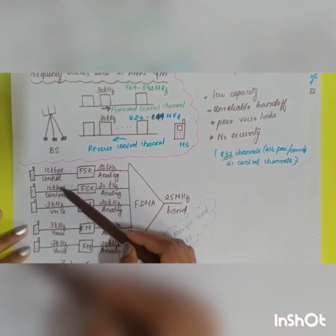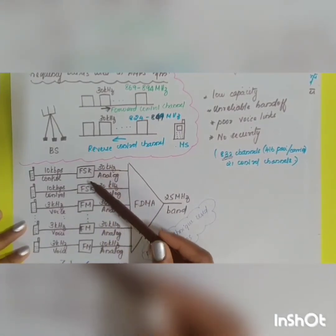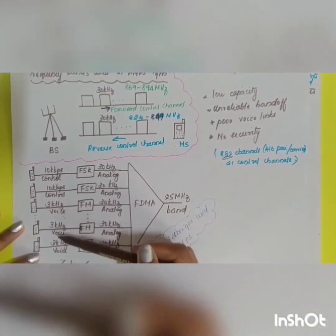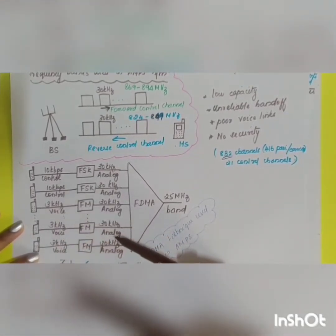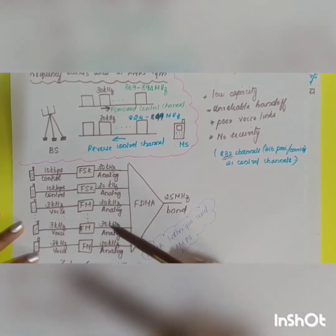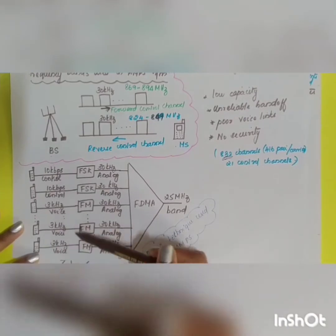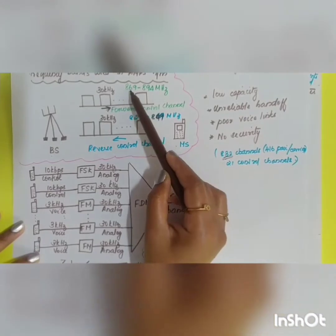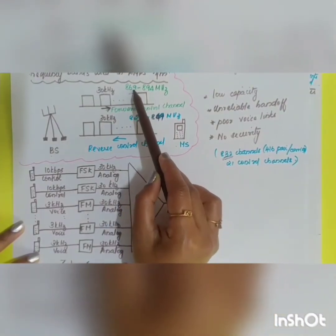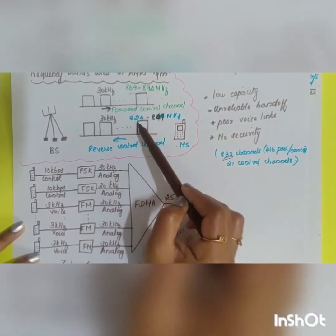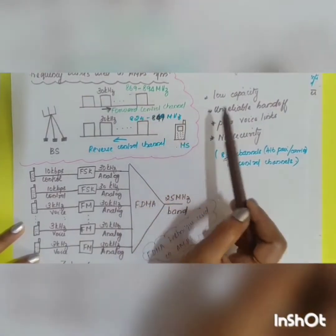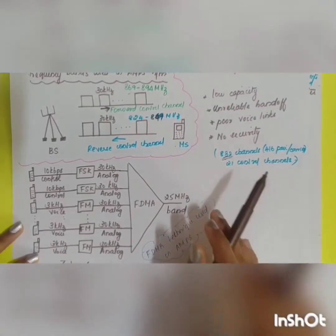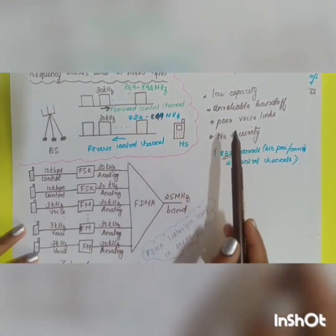The first two channels are used as control channels using FSK (Frequency Shift Keying) technology. For voice signals, a 3 kHz low-frequency signal is converted into a high-frequency signal in the 30 kHz range by means of frequency modulation. This 30 kHz is distributed between 869–894 MHz or 824–849 MHz depending on whether it is a forward or reverse control channel.